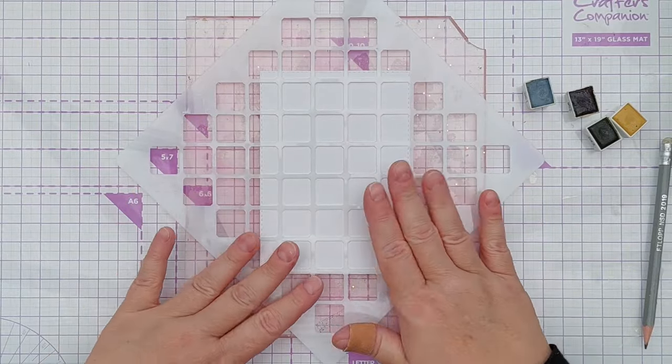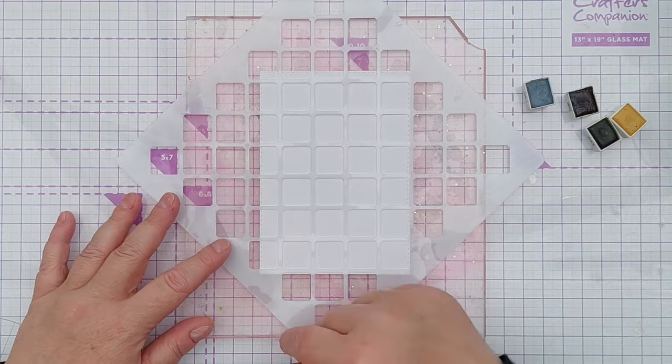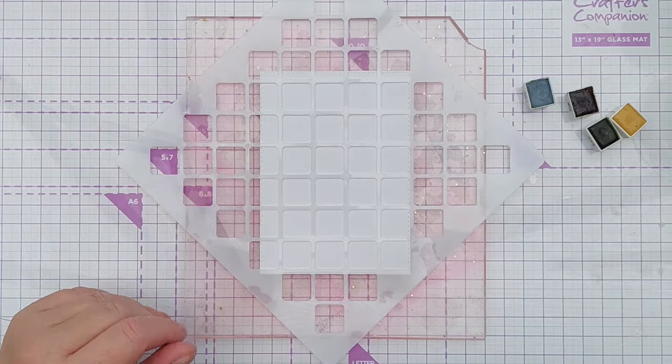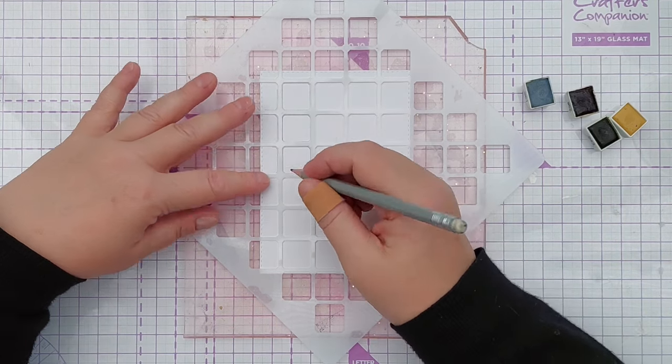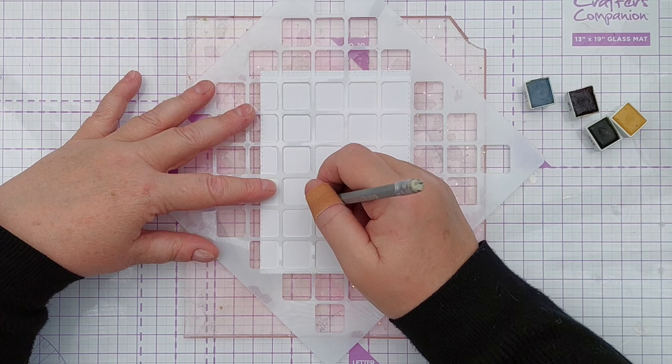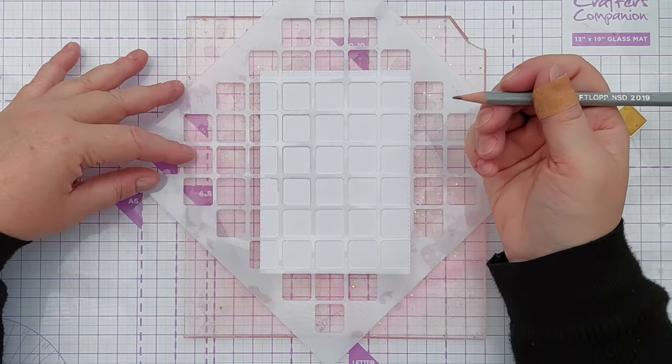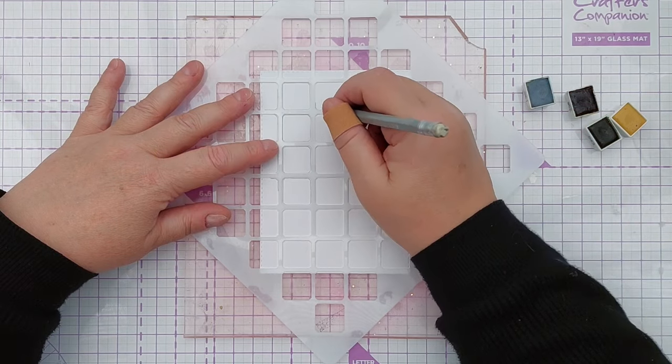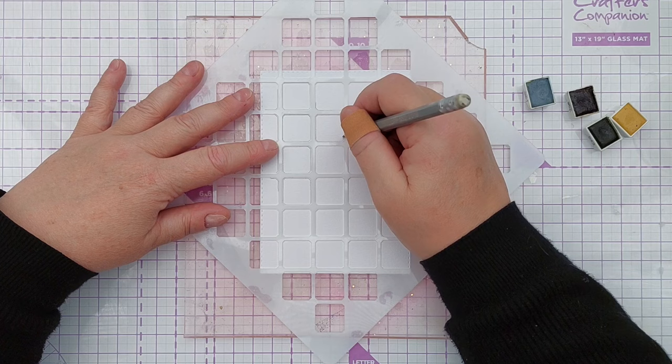I popped it on a grip mat just to keep everything still and I've lined up my stencil so my tiles are running horizontally and vertically and I'm lightly drawing around the inside of the holes in the stencil to get that tile pattern transferred onto my card. I'm not going to have the whole thing covered, I'm going to have some partial tiles.